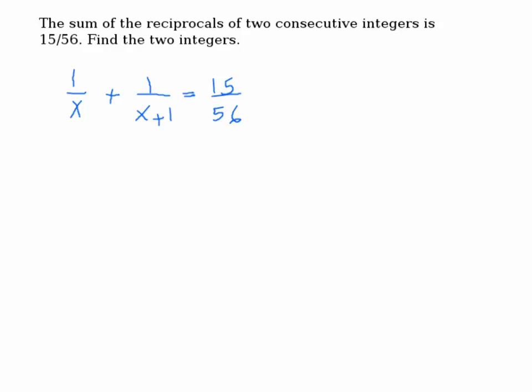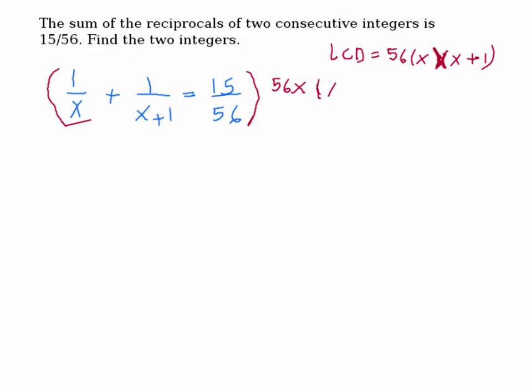Who can tell me what would be the next step here? What do we do to solve for this? Somebody typed LCD — that's correct. So what is the LCD here? The LCD is 56 times x times (x plus 1). This is correct. So we're going to multiply each term by the LCD, which is 56x times (x plus 1) over 1.